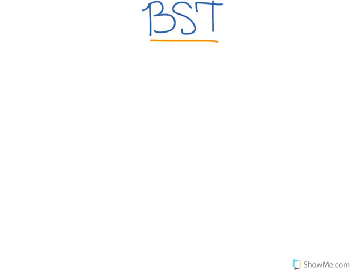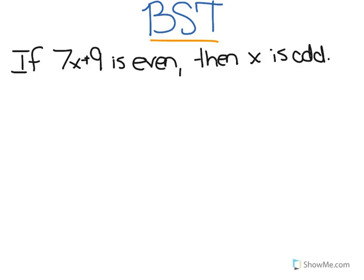Let's look at an example. If we have the conditional statement: if 7x plus 9 is even, then x is odd — and we're assuming that x is an integer — we could prove this directly by showing that if 7x plus 9 is even, that logically leads to x being odd.